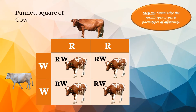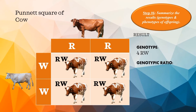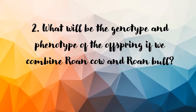Once our Punnett square is done, we are going to summarize the result by writing the genotype and phenotypes of the offspring. For the genotype, we have four RW, or four heterozygous rowan, and the genotypic ratio is 4:0. The phenotype is four rowan.